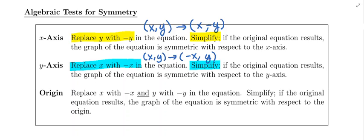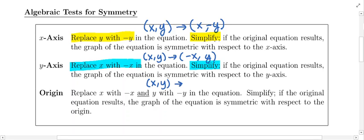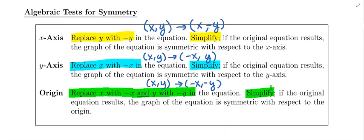Finally, if we are testing for origin symmetry, we know we have to change the sign of both x and y. So in your equation, you are going to replace x with -x and y with -y, then simplify. If you get the original equation back, the graph has origin symmetry. If you don't get the original equation back, then the graph does not have origin symmetry.